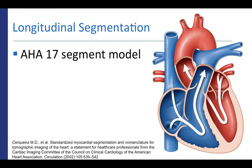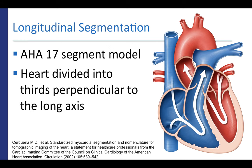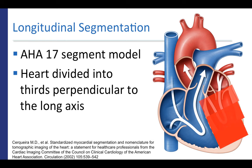The American Heart Association, or AHA, has described a 17-segment model, which is commonly used in the literature to describe left ventricular segmentation. This can be applied in multiple imaging modalities including echocardiography, cardiac CT, and cardiac MRI. In this model, the heart is divided into thirds perpendicular to the long axis, corresponding to basal, midventricular, and apical segments. The true apex is also included in the 17-segment model.